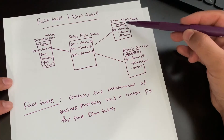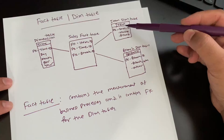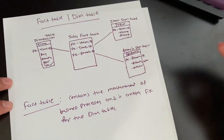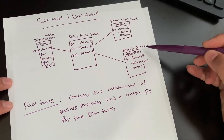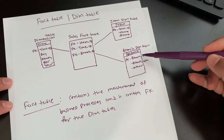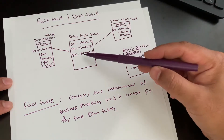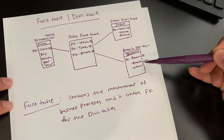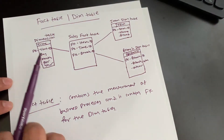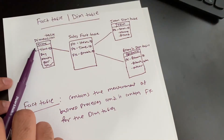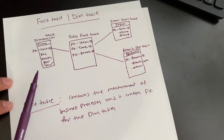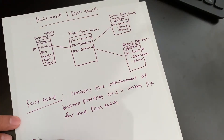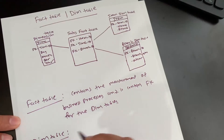In the dimension table we have all the descriptive values. Here you can see the item table, which is a dimension table containing item ID, name, and brand name. Same thing for the branch table — it has branch ID as a foreign key, with descriptive values like branch name and owner name. Similarly, the time dimension table contains time ID, day, month, quarter, and year.